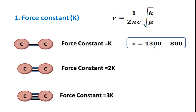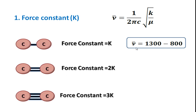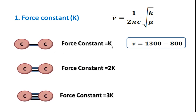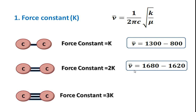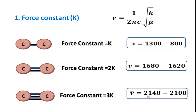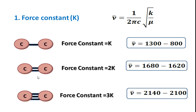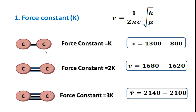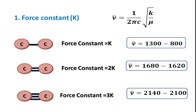We can see that the vibrational wavenumber for a carbon-carbon single bond (force constant K) is around 800–1300 cm⁻¹, whereas for a carbon-carbon double bond it is around 1620–1680 cm⁻¹, and for a carbon-carbon triple bond it is around 2100–2140 cm⁻¹. Also, hybridization differs: for a carbon-carbon single bond the hybridization is sp³, for alkenes it is sp², and for alkynes it is sp. The orbital overlap in alkynes is much greater than in alkenes, and in alkenes it is greater than in alkanes, so the force constant is higher, and that is why the wavenumber of these absorptions differs.